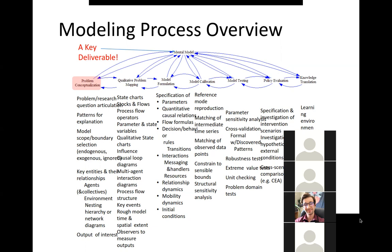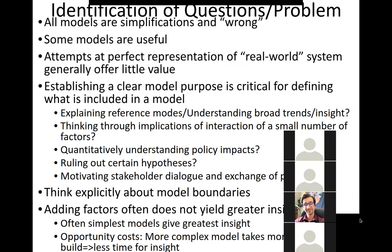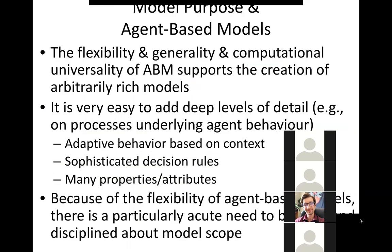Agent-based modeling goes through a process shown here. As shown from these loops, it's an iterative process. We start early and progress along, and often we go back to re-examine things because models are learning tools. We go back to re-examine our assumptions — maybe the model doesn't calibrate properly, so we go back to the model formulation stage or the model mapping stage. With agent-based models, they have an amazing flexibility of general mapping that stands out among modeling approaches.